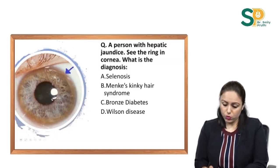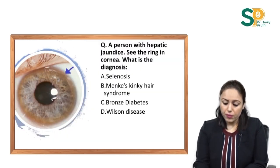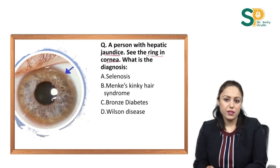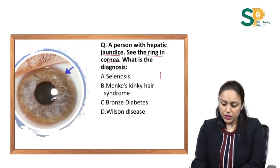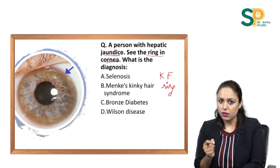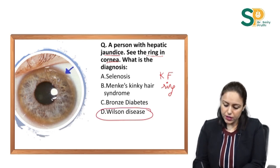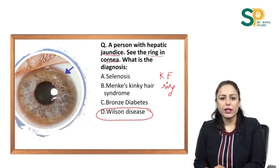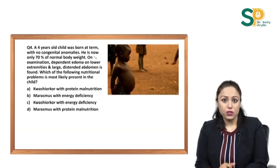Either this question was asked: a person with hepatic jaundice and a ring seen in the cornea — what is the diagnosis? This is a Kayser-Fleischer ring, a brown or green colour ring seen in Wilson's disease patients. The liver is also affected due to excess copper in the body.